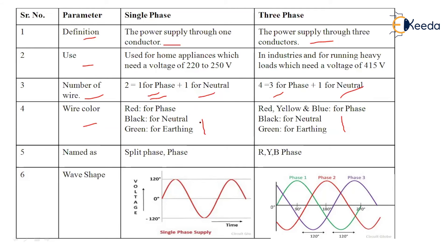The fifth parameter is naming: single phase is also called split phase or simply phase, while three phase is called RYB phase. Regarding wave shape, single phase shows a sinusoidal curve on a voltage-time graph, going from zero up to 120 and down to minus 120. Three phase has three such waveforms — phase one, phase two, and phase three — offset from each other, represented in the diagram.